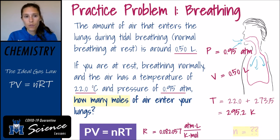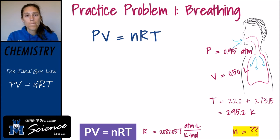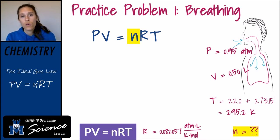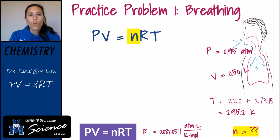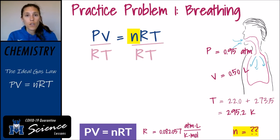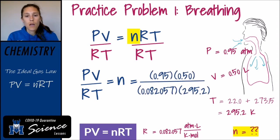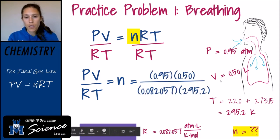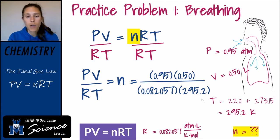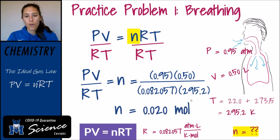Now we've identified all our variables, and we're trying to find the number of moles of air entering the lungs. Using PV equals nRT, we're solving for n. We need to rearrange this equation — since n is being multiplied by RT, we divide both sides by RT to get n equals PV divided by RT. When we plug in our values and solve, we get 0.020 moles. So every time you take a resting average breath, about 0.02 moles of air enter your lungs.